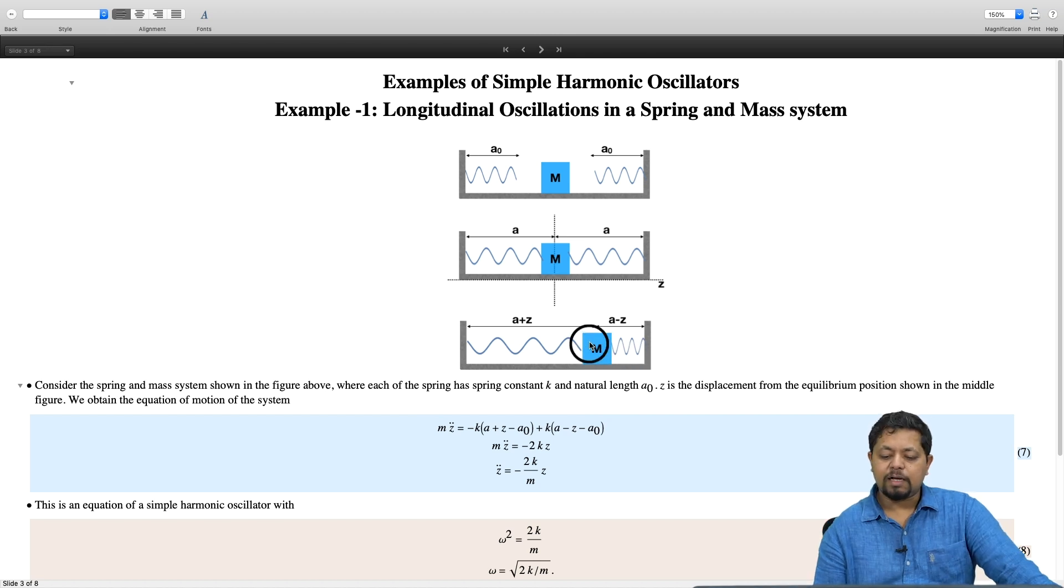The force acting on this mass, let us take this snapshot for example. In this particular picture, the force acting on this mass is because of this spring to the left and because of this spring also to the left. Because of this spring, the force that is being exerted to the left is equal to k times the change in the length of the spring.